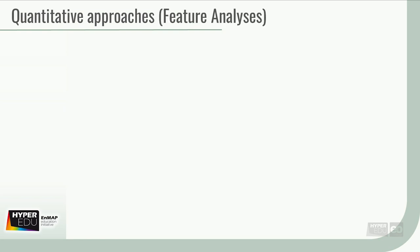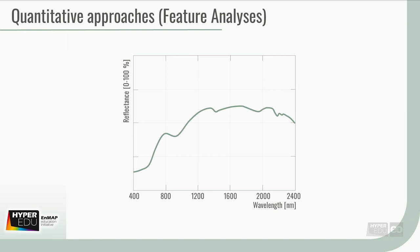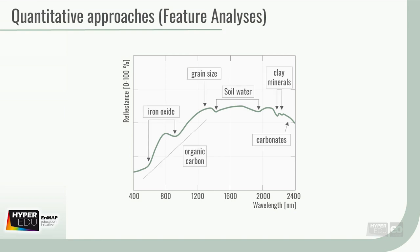I'd like to look at the spectral feature analysis first, as this is a really well-established method. Spectral feature analysis is based on an empirical relationship of the spectra with the samples. As you know, some soil properties directly influence the spectra, causing absorption at certain wavelengths.